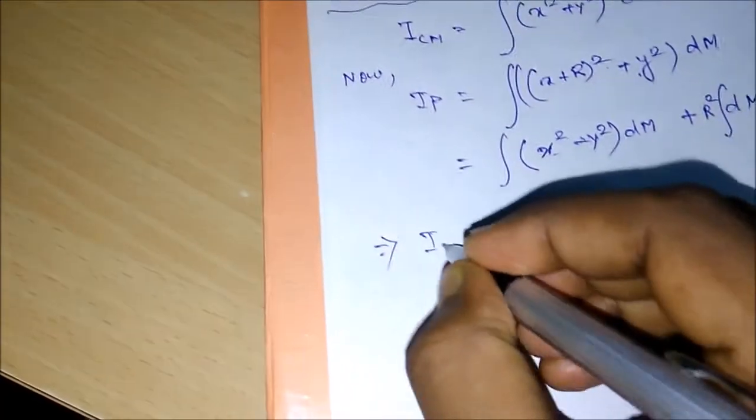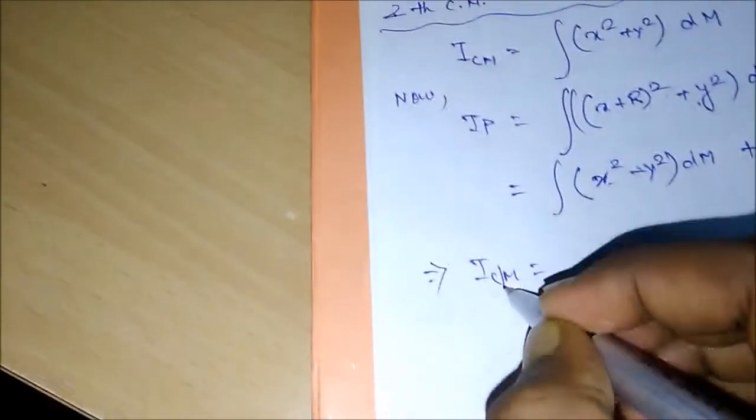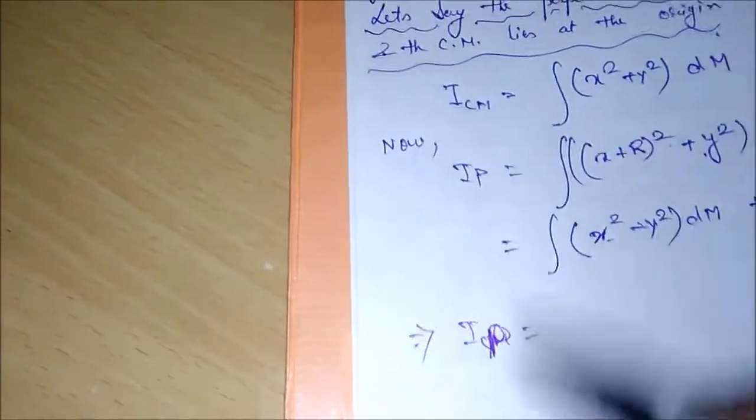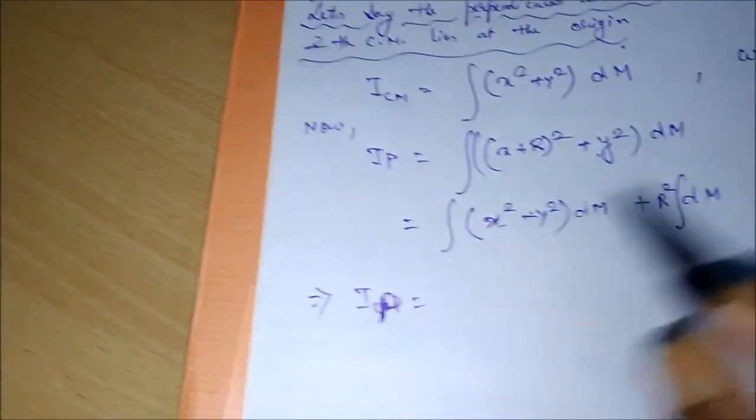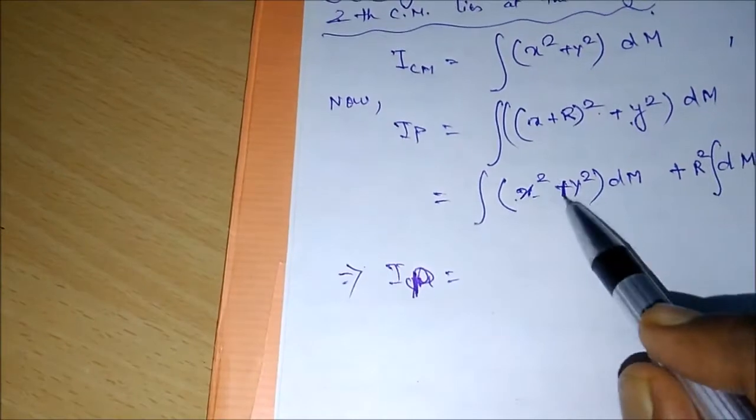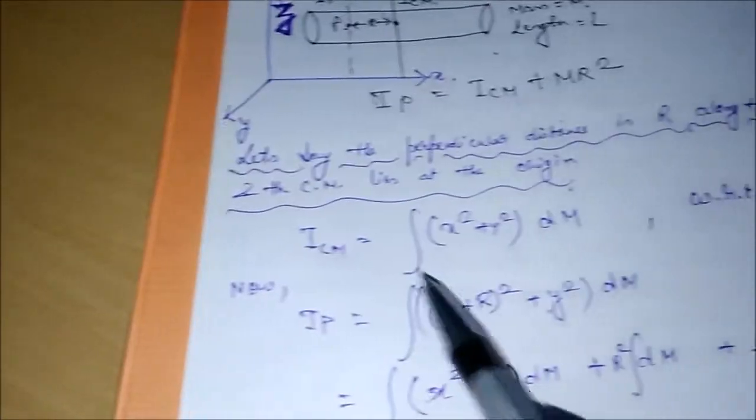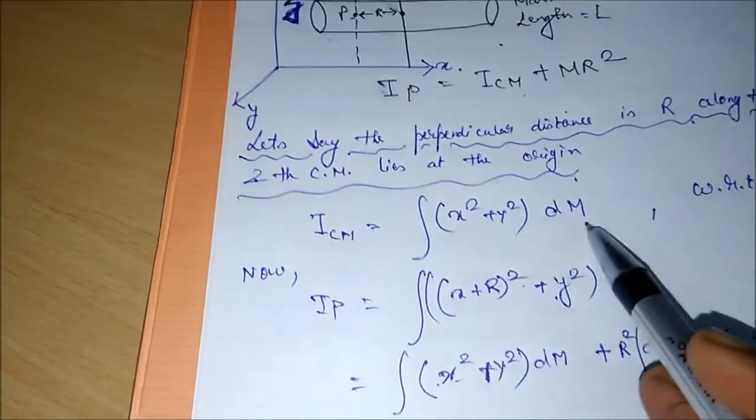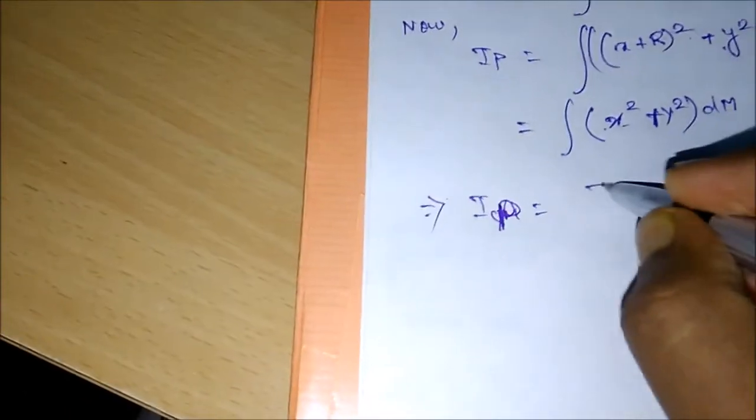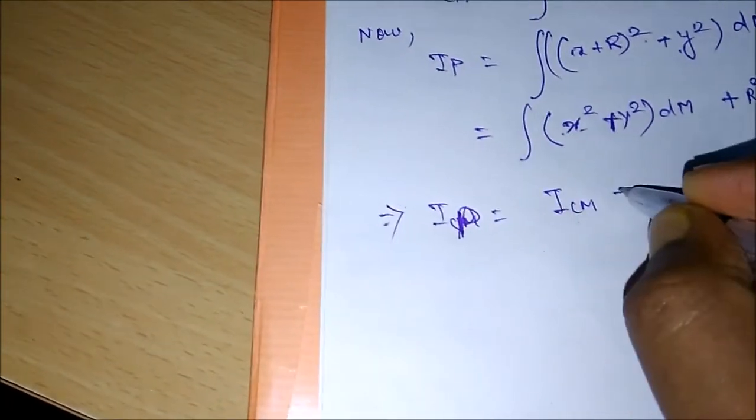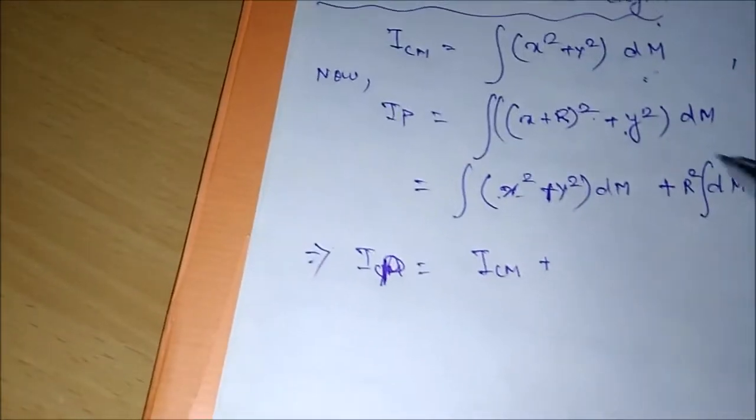So we get Icm: sorry, Ip. Ip is equal to... this is a plus sign, okay. (x² + y²) dM. If you observe, this is nothing but Icm that we have already defined earlier, so I can write this one. This is equal to Icm.